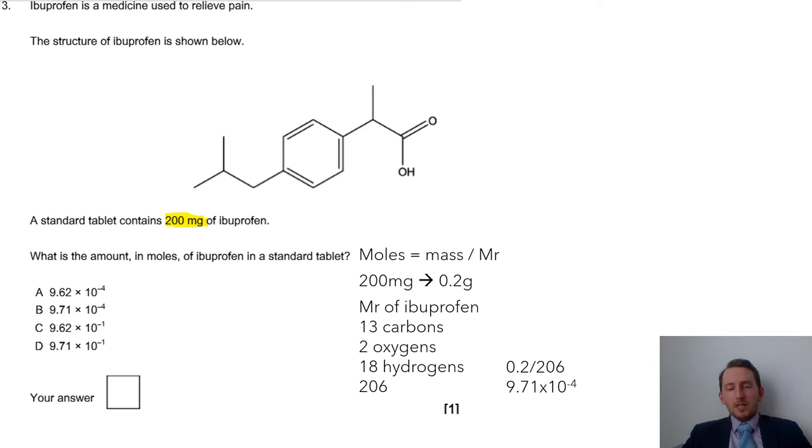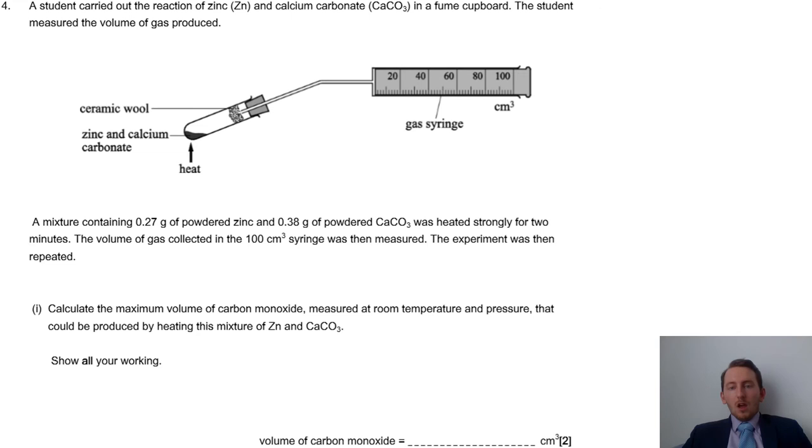Okay, we have got 0.027 of zinc, 0.38 of calcium carbonate, heat strongly, collect the volume of gas. Calculate the maximum volume of carbon monoxide at room temperature by heating your zinc and calcium carbonate. A lot of information there. Going through and highlighting key information is always a good thing to do. To start a question, you think, right, what can I work out? You won't be able to work out your answer straight away. Sometimes you've got to do some other stages first.